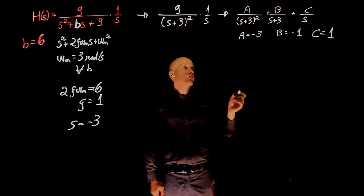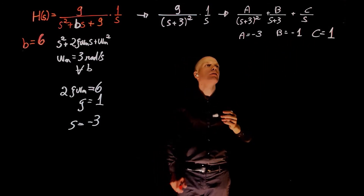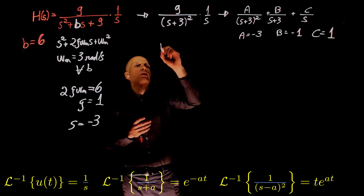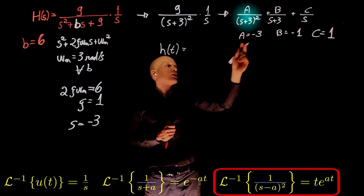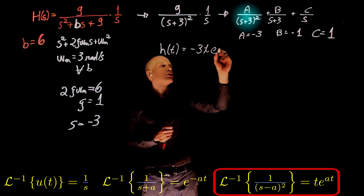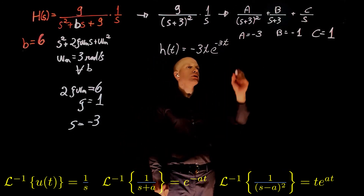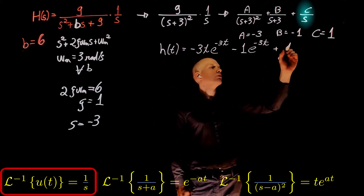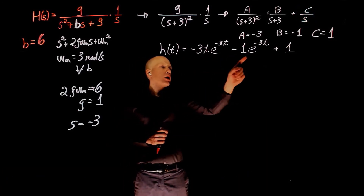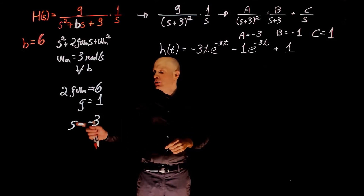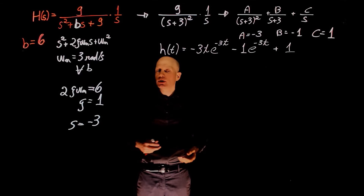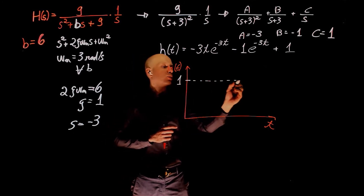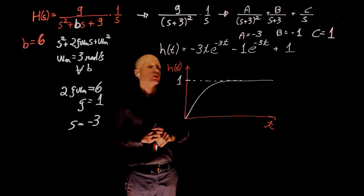Solving for a, b, and c gives values of negative 3, negative 1, and 1. Taking the inverse Laplace using a table of Laplace transforms, h of t becomes negative 3 times t exponential of negative 3t, minus exponential of negative 3t, plus 1. We see again we only have exponential components, which is expected because the roots are real numbers with no imaginary component. The function will eventually tend to 1, reaching it following an exponential curve.